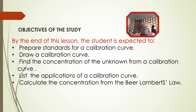The objectives of the study: by the end of this lesson, the student is expected to prepare standards for a calibration curve, draw a calibration curve, find the concentration of the unknown from a calibration curve, list the applications of a calibration curve, and calculate the concentration from the Beer-Lambert law.